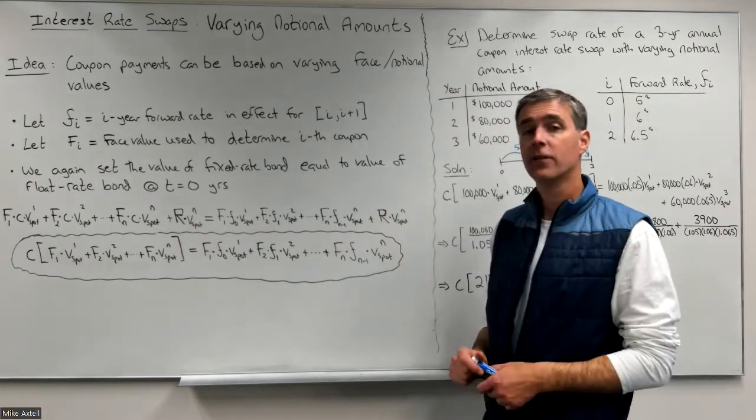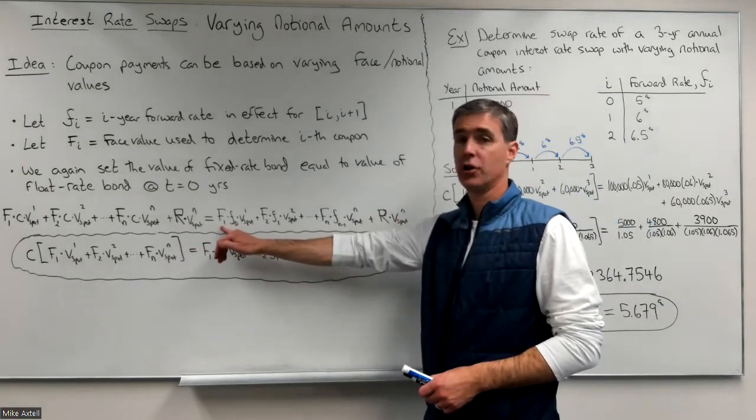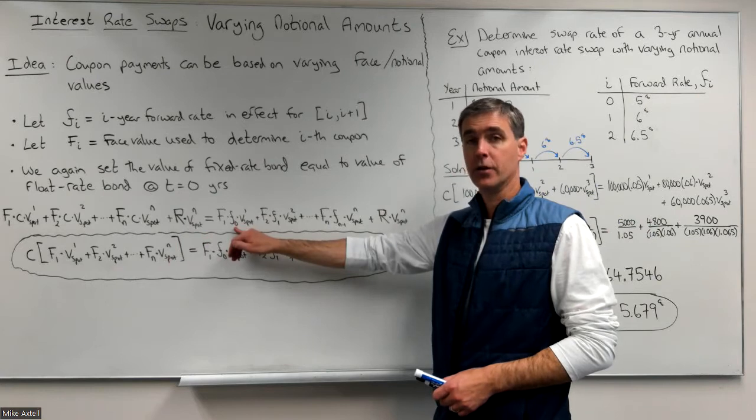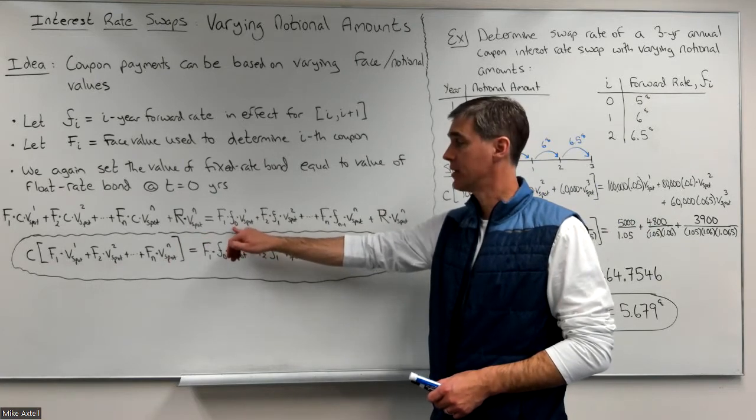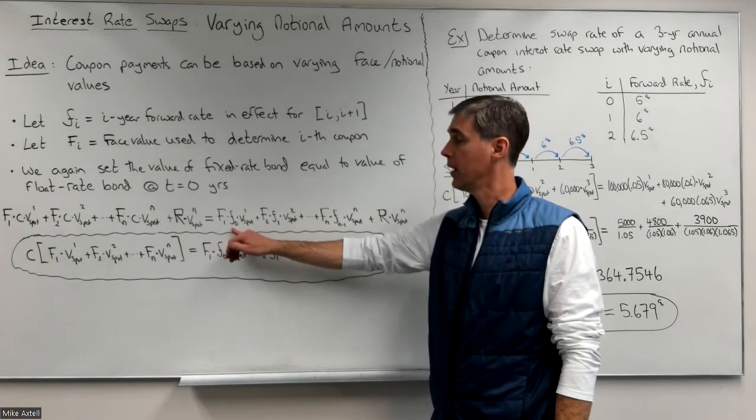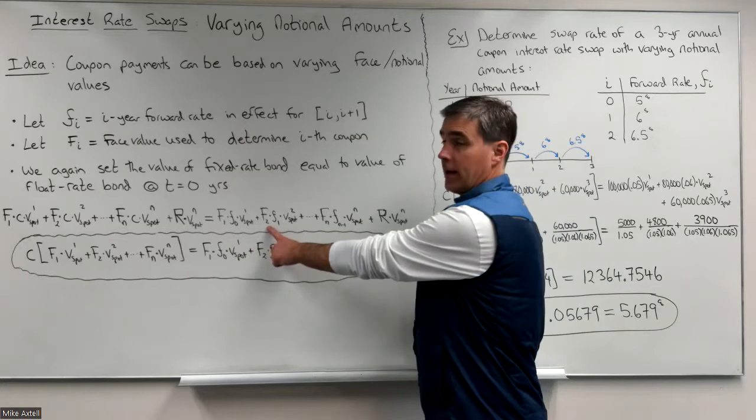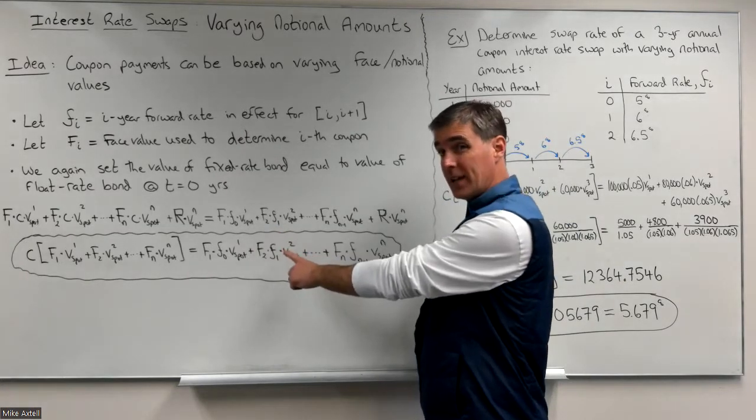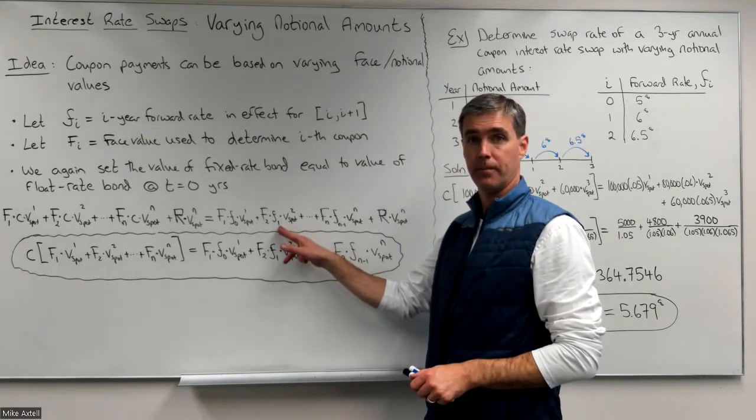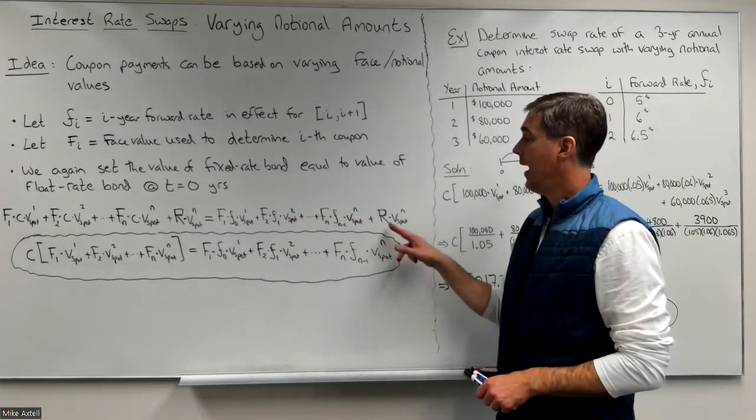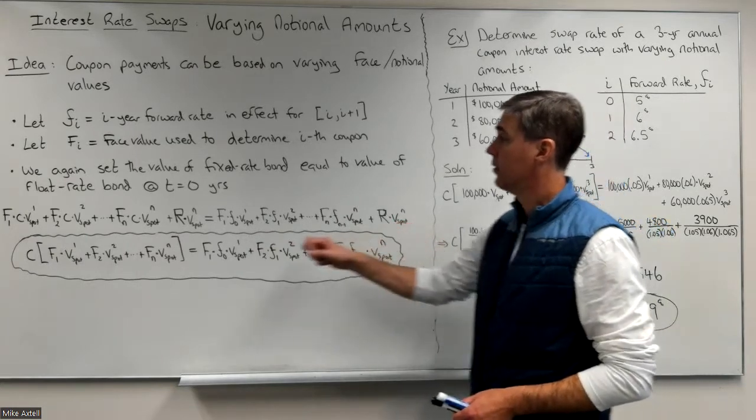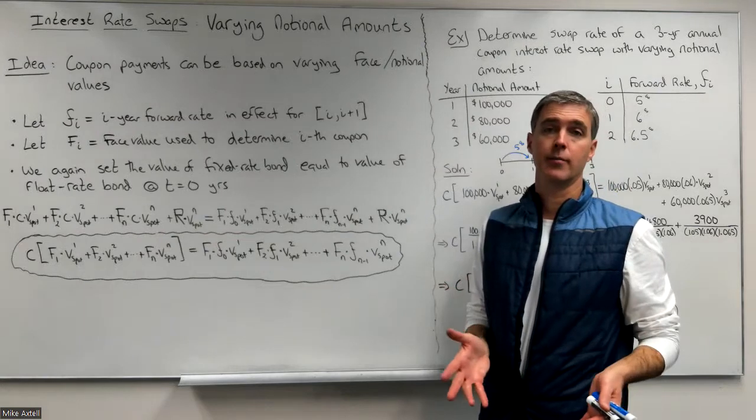On the right hand side is the floating rate bond price. The coupon rate is the forward rate in effect during that coupon period. The first coupon period is from time zero to time one, so little F sub zero will be the coupon rate for that first coupon, dragged back one year. Second coupon uses capital F sub two. The coupon rate is the one-year interest rate in effect from time one to time two, which is little F sub one, dragged back two years, all the way up to the nth coupon. The redemption value is the same on both sides, dragged back using the same interest rates, so they cancel.